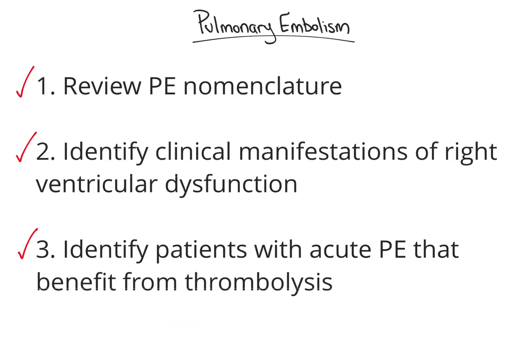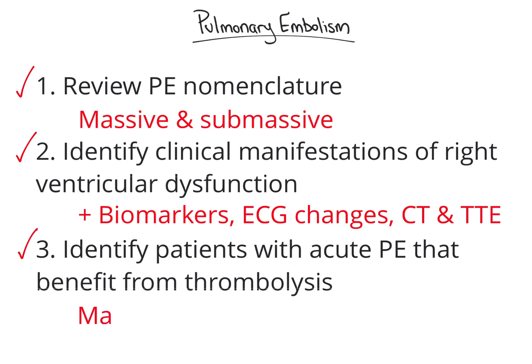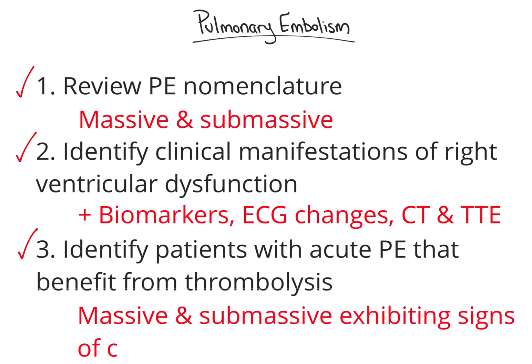In this video, we reviewed PE nomenclature, including the definitions for massive and submassive PE. Next, we identified clinical manifestations of right ventricular dysfunction, including positive biomarkers, ECG changes, and relevant CT and TTE findings. Finally, we identified which patients with acute PE benefit from thrombolysis: patients with massive PE, and select patients with submassive PE exhibiting signs of clinical decline.